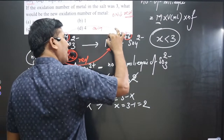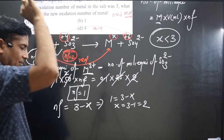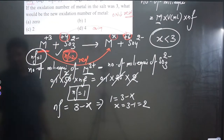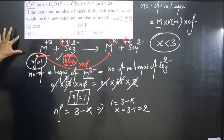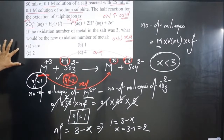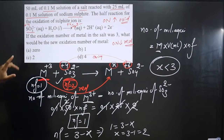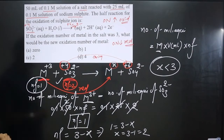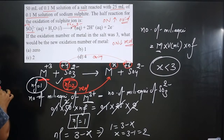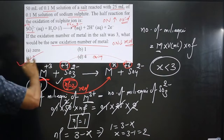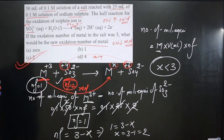So x is the new oxidation number of the metal. The answer corresponds to option C. Whenever this salt participates in the reaction, the oxidation number of the metal changes from +3 to +2 — the new oxidation number for the metal is 2.